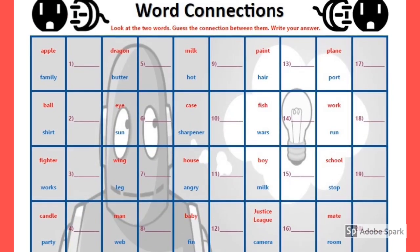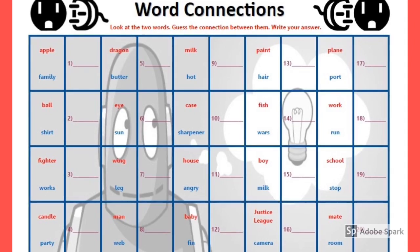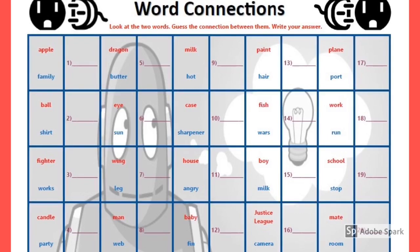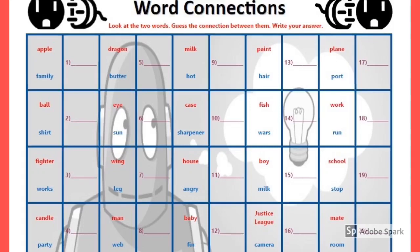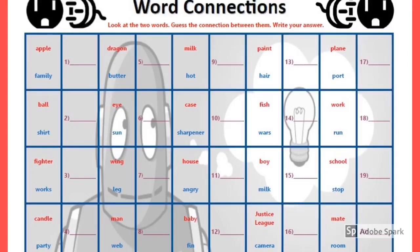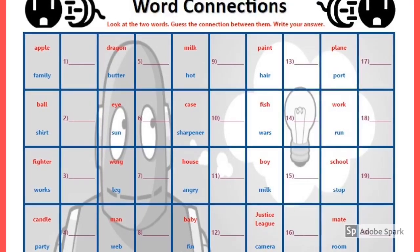Word Connections is a brain teaser. It's a puzzle that puts together two words. Your job is to figure out what word connects the two. For example, if I said sun and ice, you have to think, what word connects sun with ice? The answer — cream. Ice cream and sun cream.